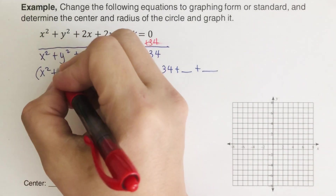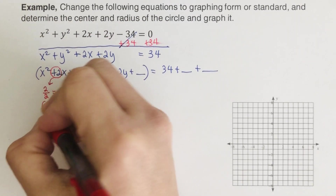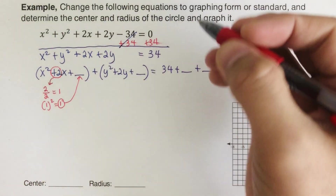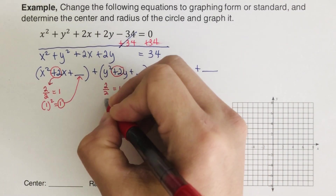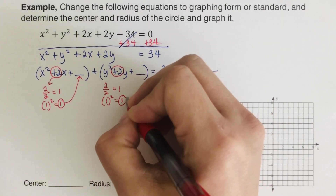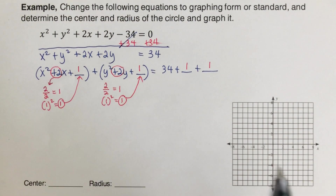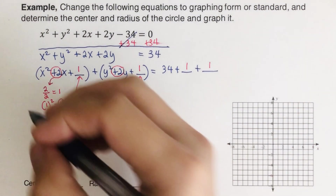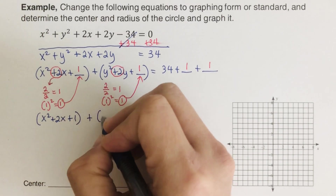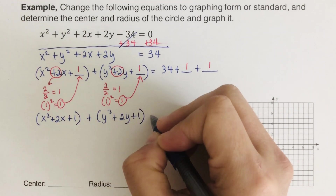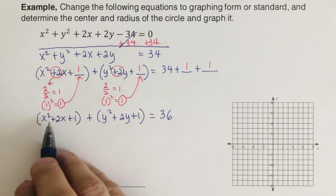To find the values for the blanks, we take the coefficient of x, which is 2, divide by 2 to get 1, then square it: 1 squared equals 1. So the first blank is 1. For the y group, the coefficient is also 2: 2 divided by 2 is 1, and 1 squared is still 1. So both blanks are 1. The equation becomes x squared plus 2x plus 1, plus y squared plus 2y plus 1, equals 34 plus 2, which is 36.